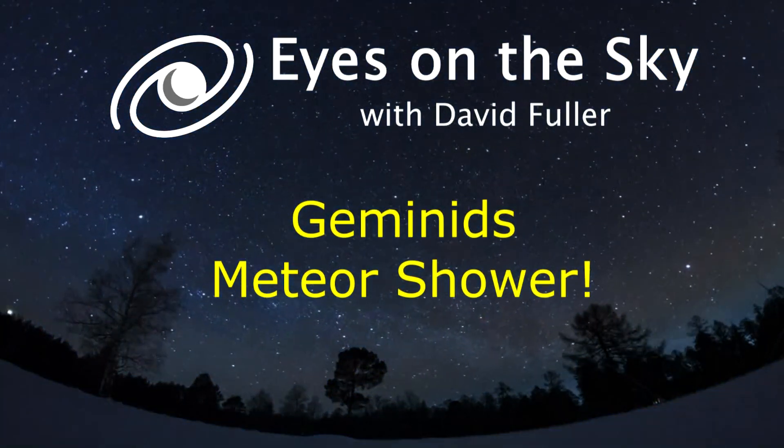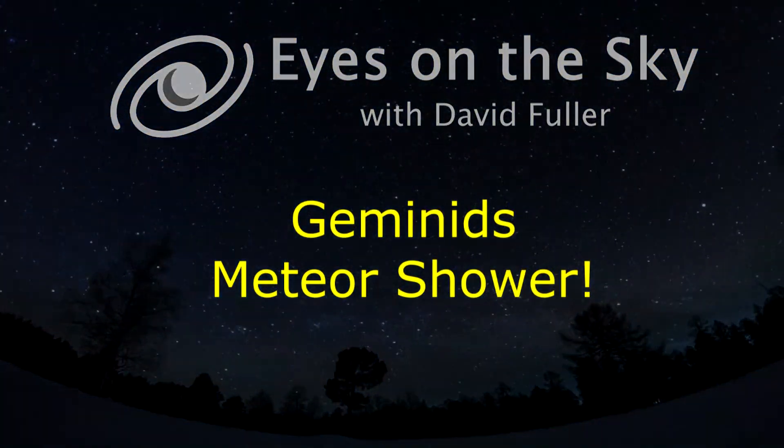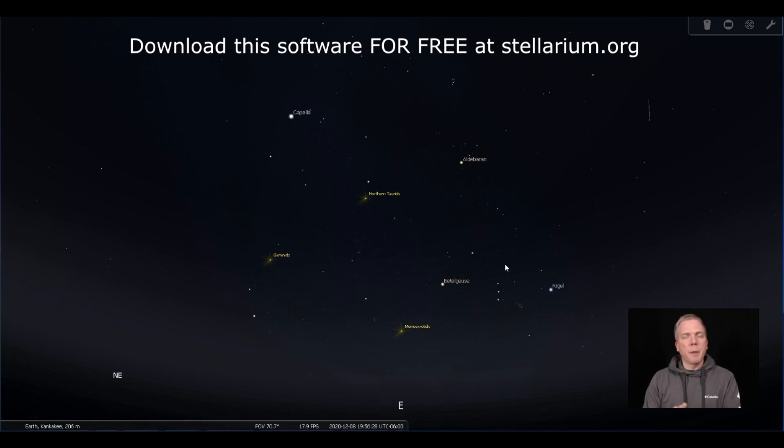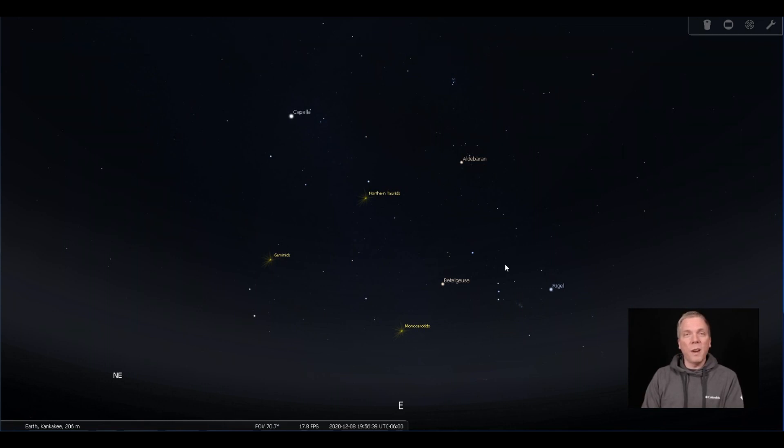Salutations celestial sight seers, I'm David Fuller. Welcome to Eyes on the Sky, what's up this week. I tend to avoid talking about some of the minor meteor showers like the Eta Aquariids and some other ones, just because they don't really produce a lot of meteors - maybe 15 to 20 per hour, which means at best you would see one every three to four minutes under ideal conditions at the peak under dark skies.